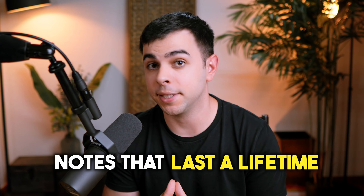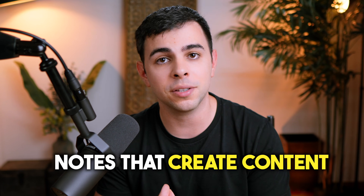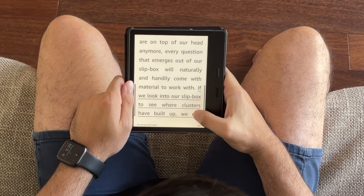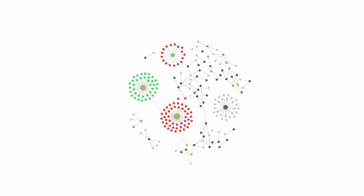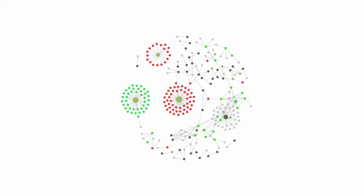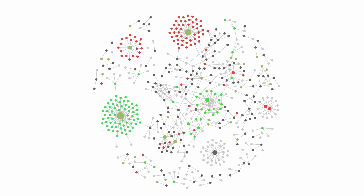If you want to make notes that last a lifetime — notes that help you think and even create content — then this video is for you. Because most people just take notes passively: they copy or highlight whatever they find interesting and call it a day. But when you make smart notes, you're creating something. It's no longer someone else's thoughts, it's your own. And as you make more and more smart notes, your system becomes exponentially more useful, to the point that it becomes an idea generation machine.